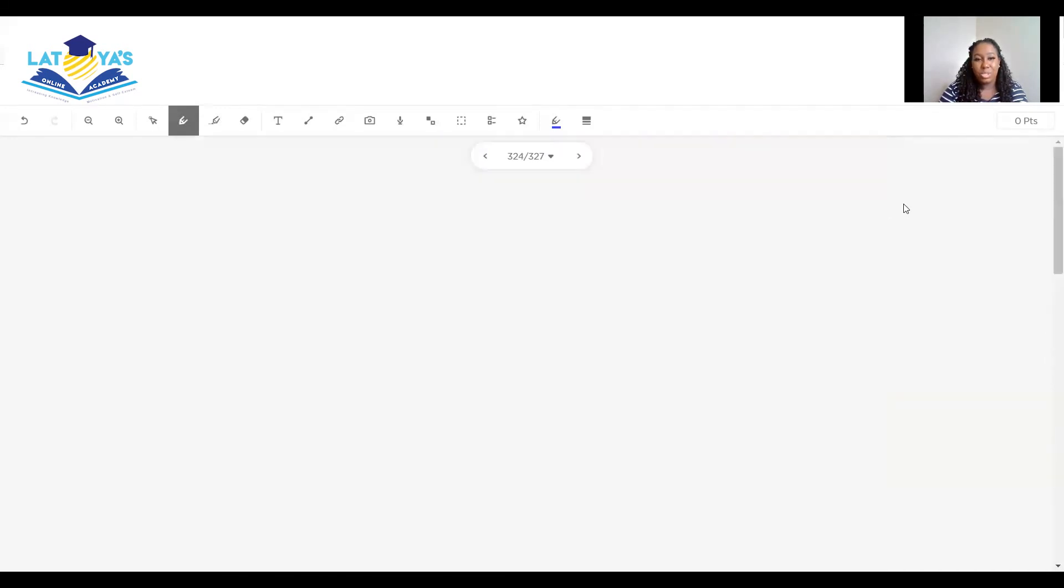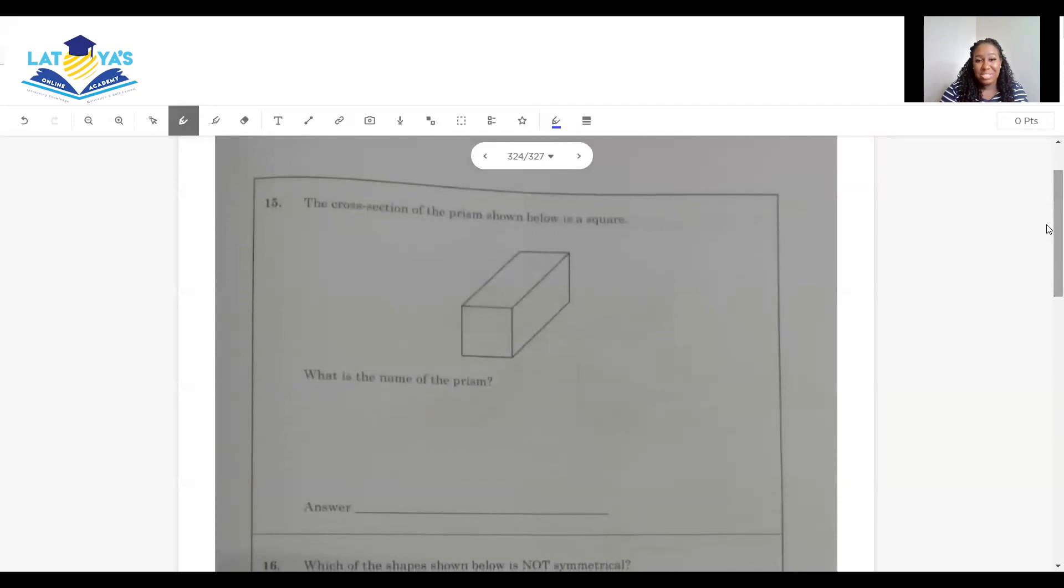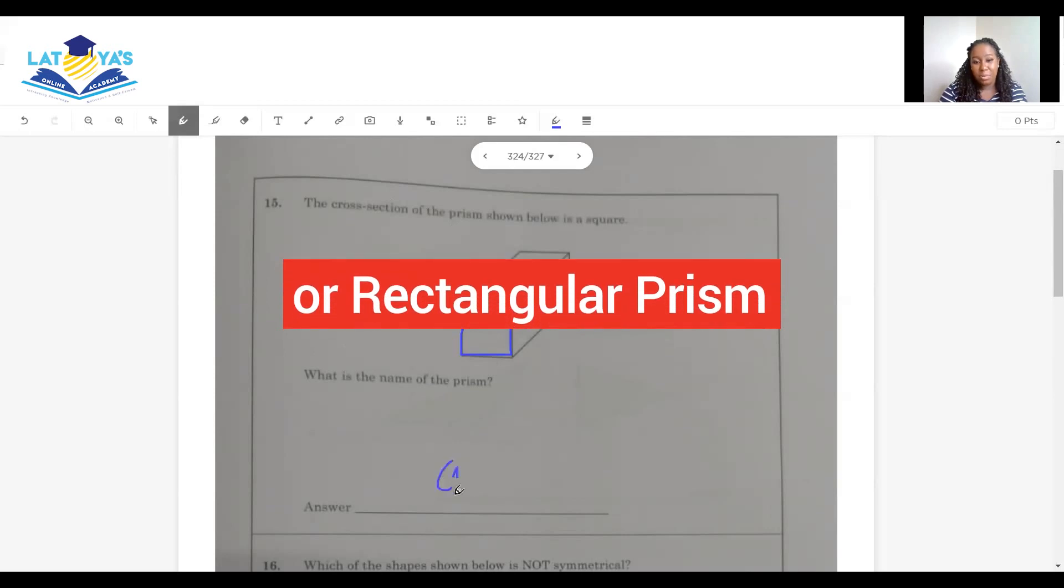Question 15. The cross section of the prism shown below is a square cross section. If this shape is cut down the middle here, the shape that we will see is the same shape at the end of this prism. We'll see a square. So that's why they say when the cross section of the prism shown below is a square. What is the name of the prism? The name of this prism is a cuboid. I hope you all spelled cuboid correctly.